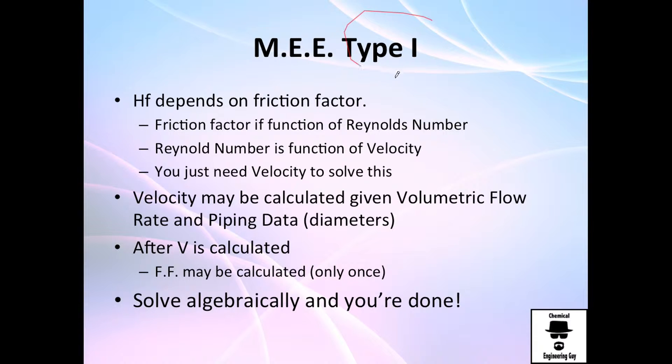This is type number one since the loss of friction depends on velocity because it depends on Reynolds number and Reynolds number is a function of velocity. So eventually you're going to need velocity to calculate the friction loss.